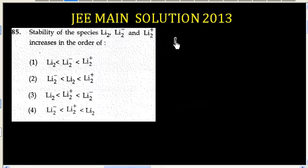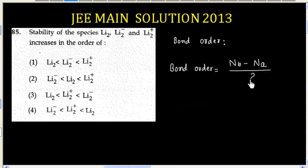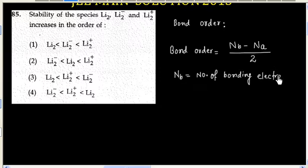This problem is related to calculation of bond order. Bond order is defined as number of bonding electrons minus number of anti-bonding electrons divided by 2. NB denotes number of bonding electrons, and NA denotes number of anti-bonding electrons.